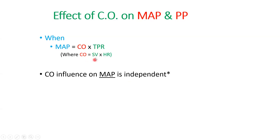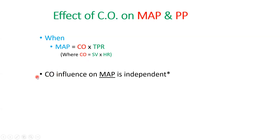Another aspect of the word 'independent' here is that we don't really care which component of cardiac output is increasing — whether it's an increase in stroke volume, or an increase in heart rate, or an increase in both. As regards to MAP, it doesn't really matter where the increase in cardiac output has come from.